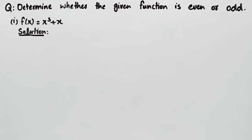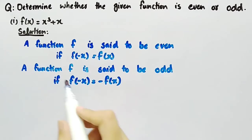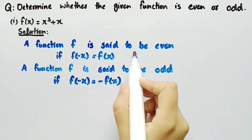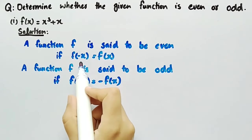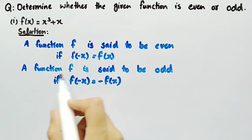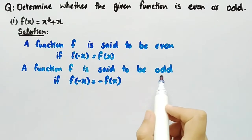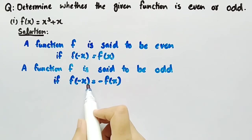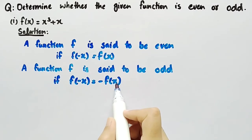Before coming towards its solution, first let's see what is an even and odd function. A function f is said to be even if f(-x) = f(x), and a function f is said to be odd if f(-x) = -f(x).